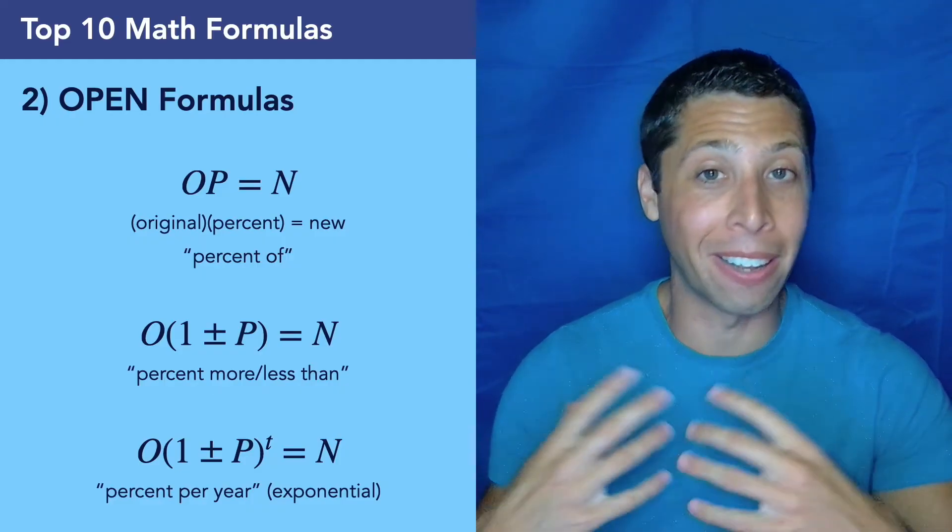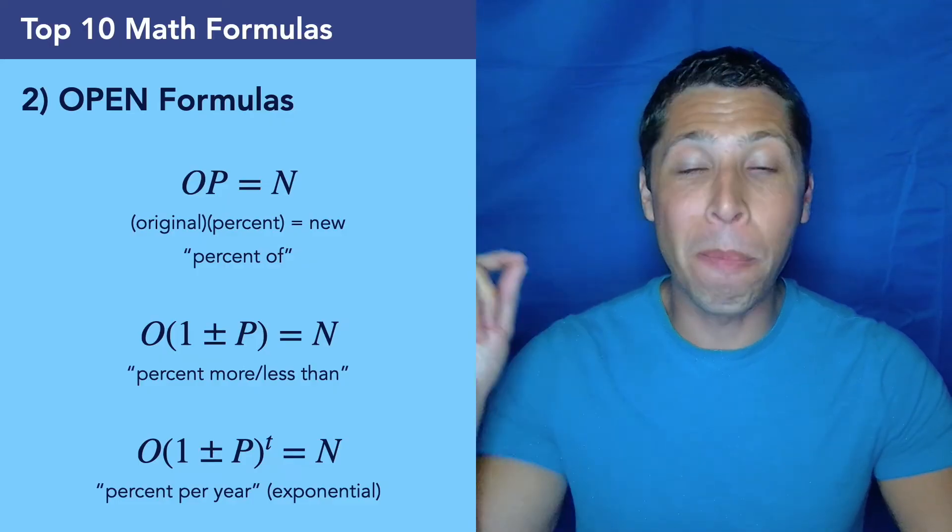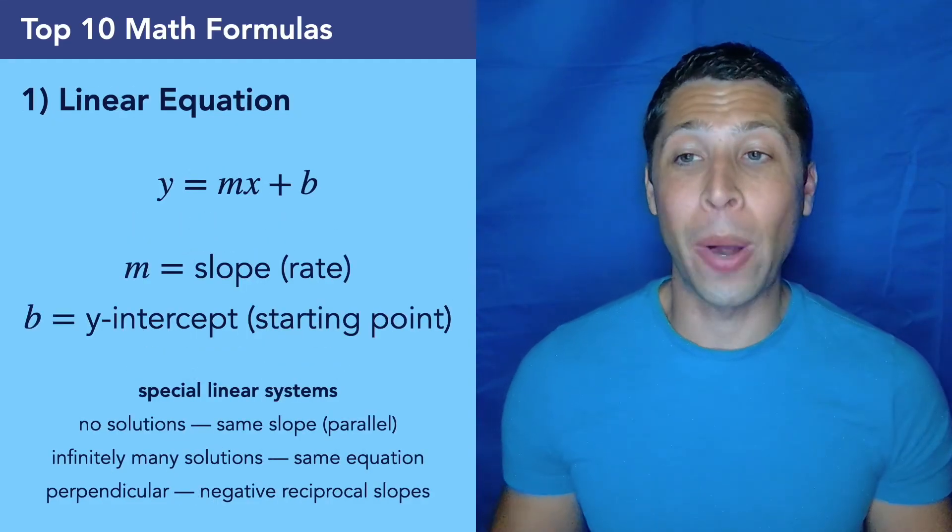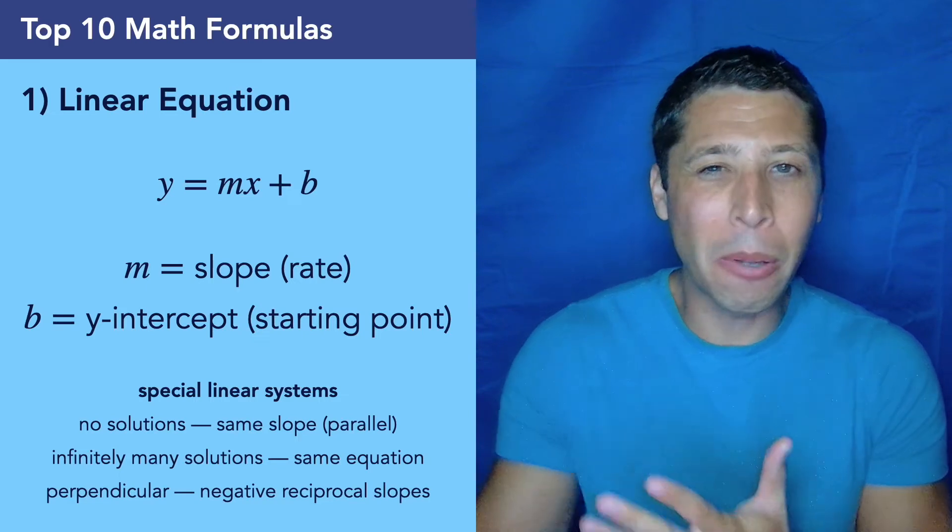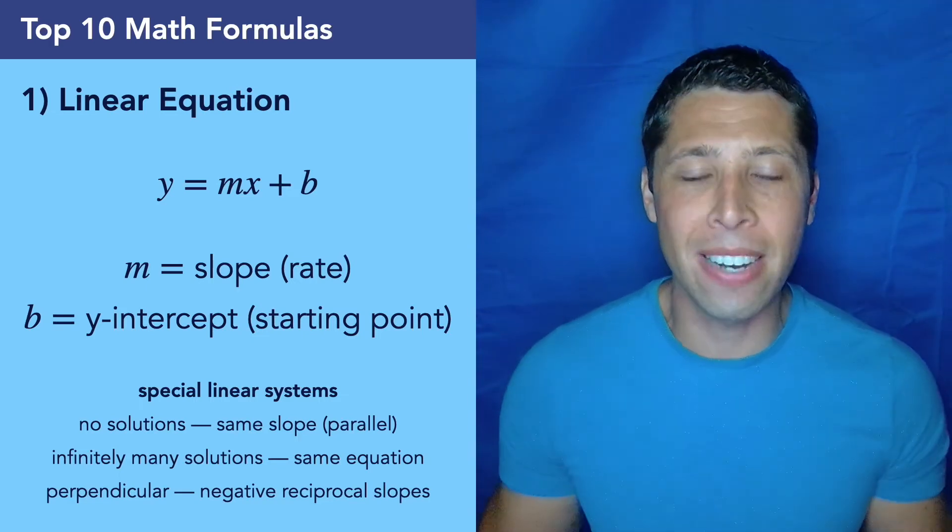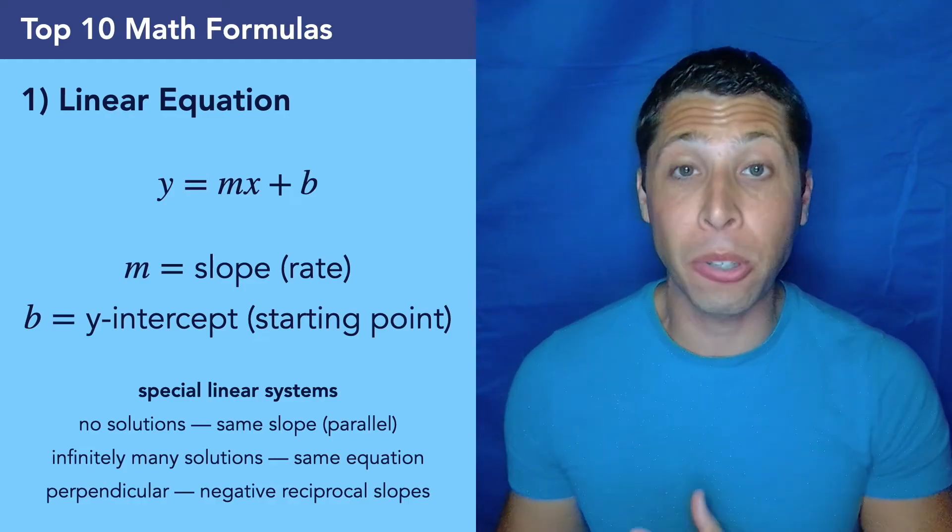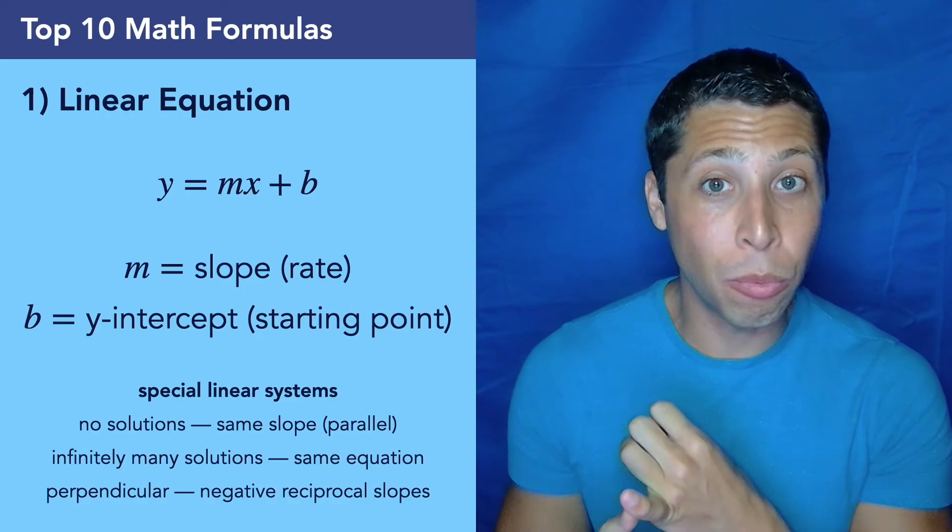And now for the most important formula you need for the SAT, it is the linear equation, y equals mx plus b. And this may seem anticlimactic, because it's probably one of the easiest ones on this list. So why is it number one? Well, because it appears everywhere on the SAT. Like 25% of the SAT is just lines. So we have to be able to read this equation really well, be able to pull the slope, which is the m, and the y-intercept, which is the b, out of this equation really quickly.